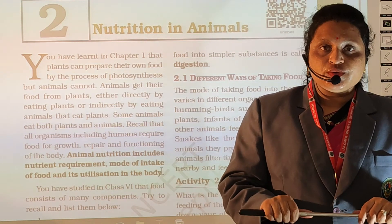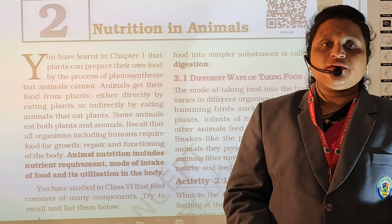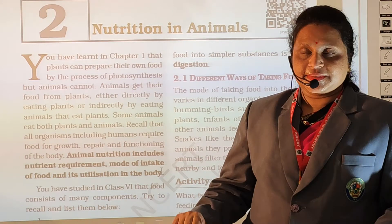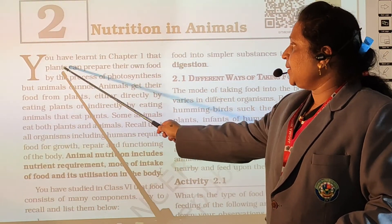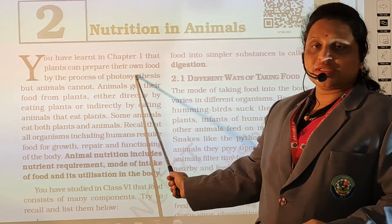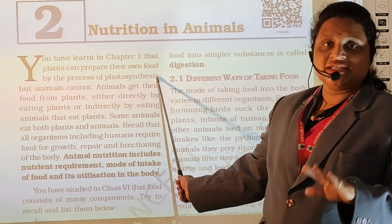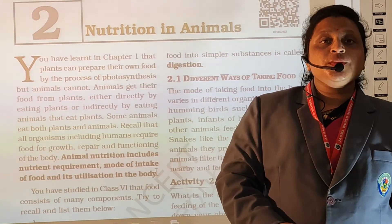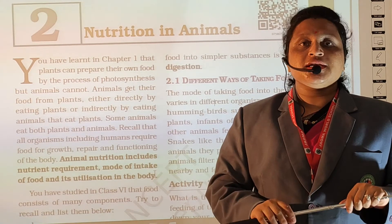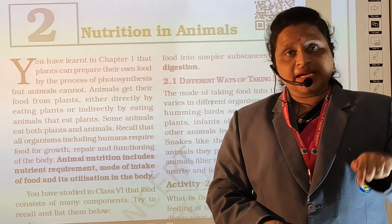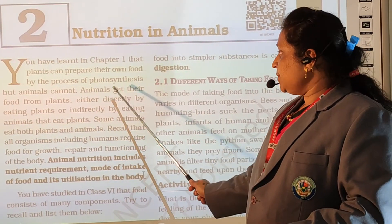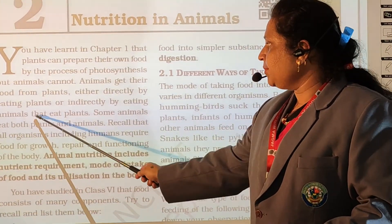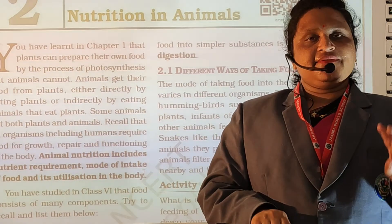Today we are going to look at how and when animals get their nutrition from plants as well as from some types of animals. Plants can prepare their own food by the process of photosynthesis, but animals cannot. Human beings are also one type of animal and are dependent directly or indirectly on plants. Animals get their food from plants either directly by eating plants or indirectly by eating animals that eat plants.